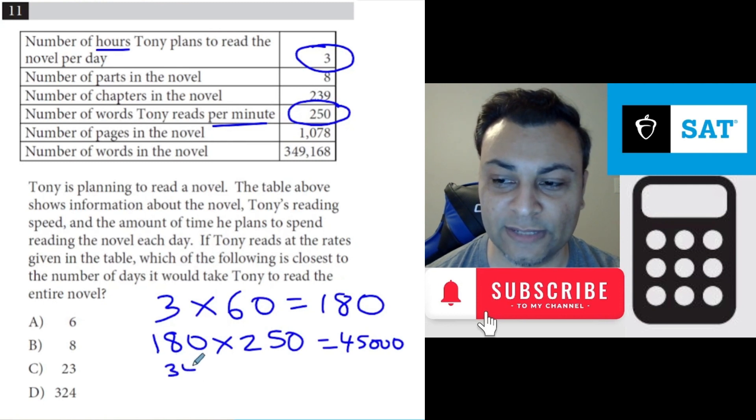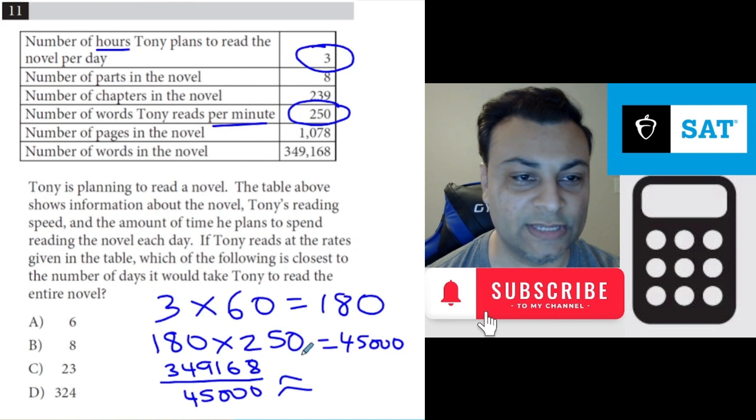So we do 349,168 words divided by 45,000. Let's get the calculator for that.